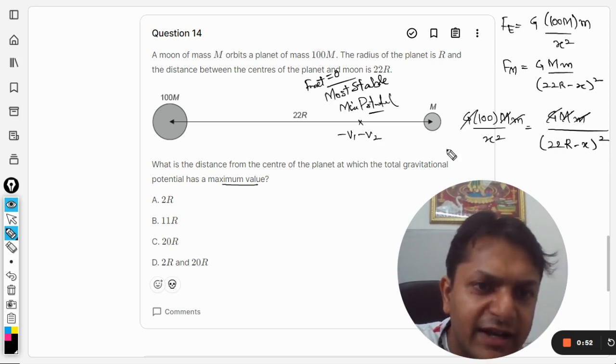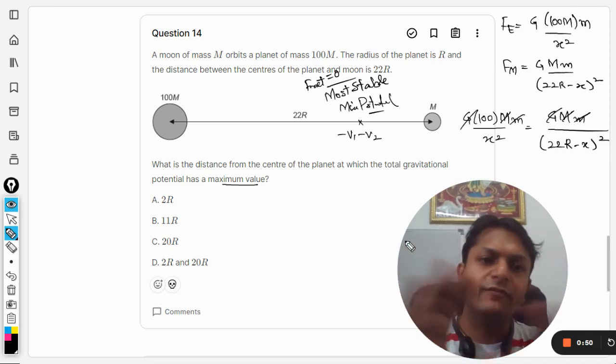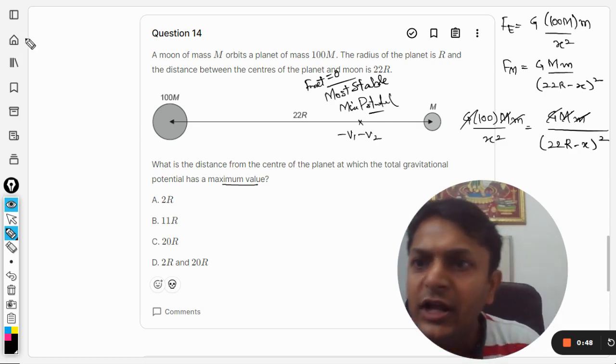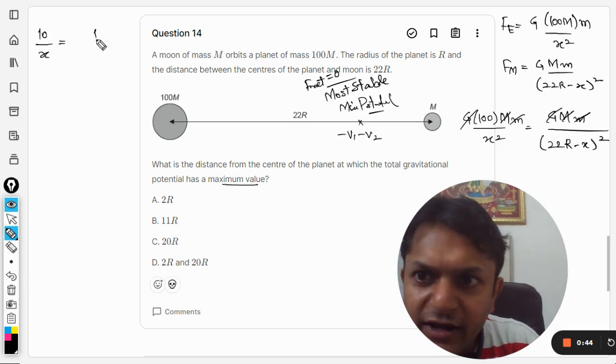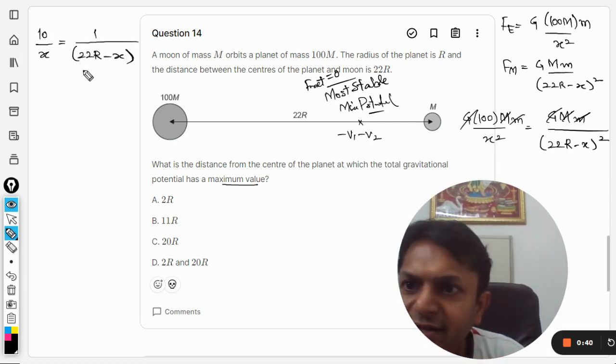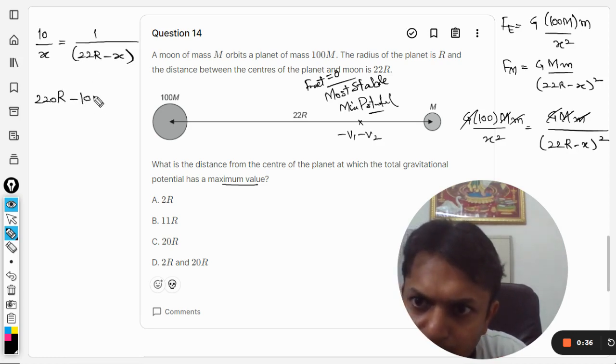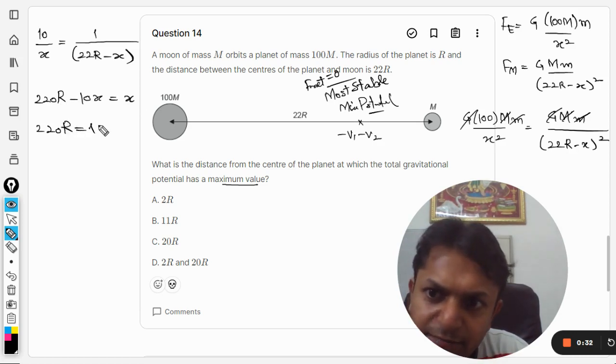Gmm will get cancelled out. Now clearly you can take a very beautiful square root here and the equation will become 10 divided by x equals 1 over (22r minus x). Simple algebra, you should not be having any problem with this.